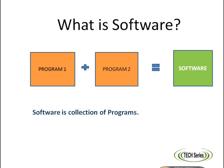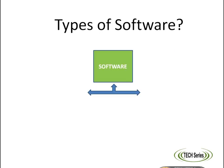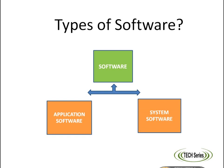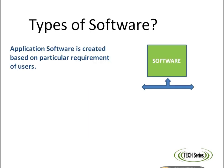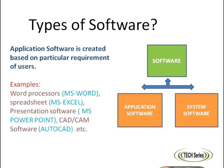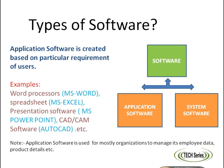How many types of software are there? There are two types of software: application software and system software. Let's start with application software. It is created based on the particular requirements of users. Application software is used mostly by organizations to manage employee data, product details, etc. These are examples of application software.